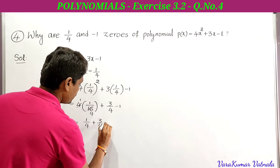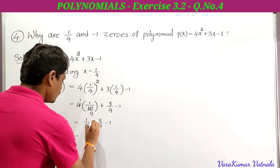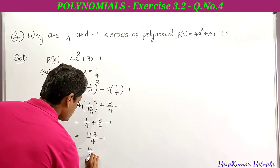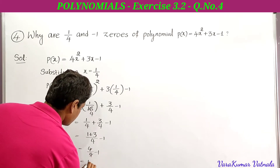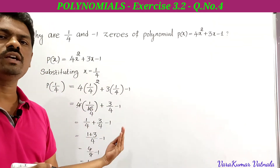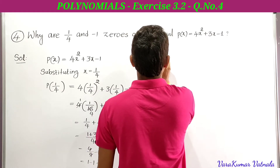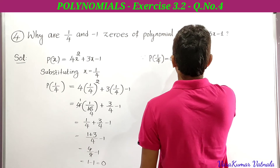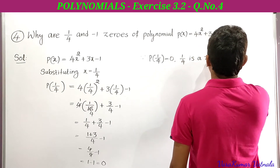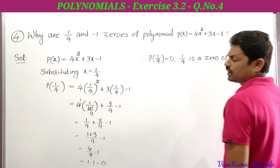The denominators are the same, so we add the numerators: 1 + 3 = 4, giving 4/4 = 1. So it is 1 - 1 = 0. Therefore p(1/4) = 0, and since p(1/4) = 0, we conclude that 1/4 is a zero of p(x).